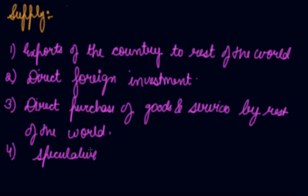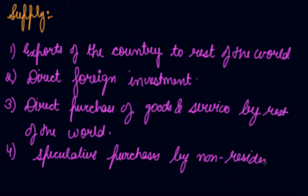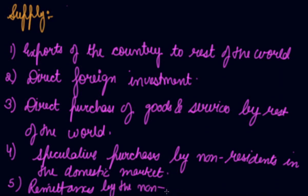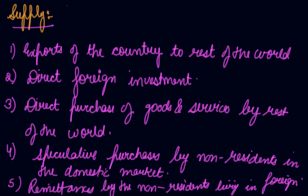Fourth is speculative purchases by non-residents in the domestic market. If they speculate to purchase your currency, there will also be a supply of foreign exchange. Fifth is remittances by non-residents living in foreign countries. If a person living in a foreign country is sending you money, there is an inflow of foreign exchange. These are the various sources from where you have the demand and supply of foreign exchange.